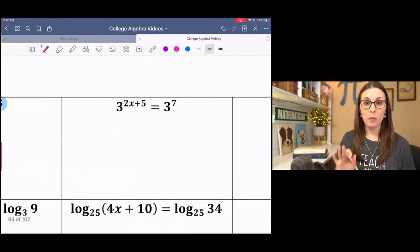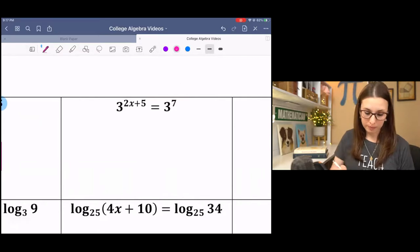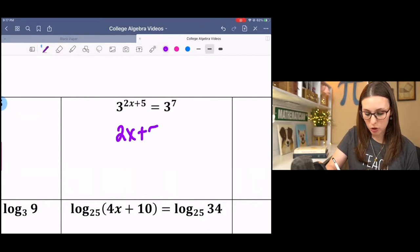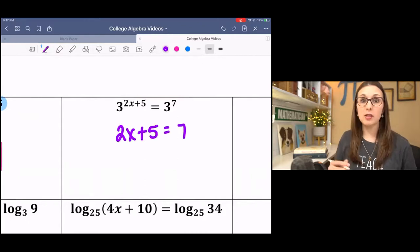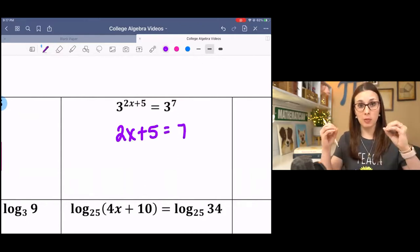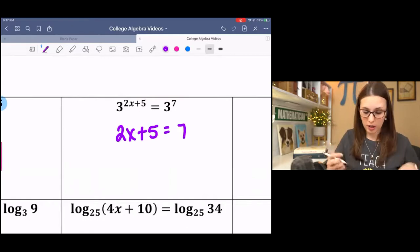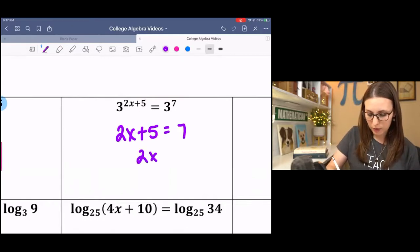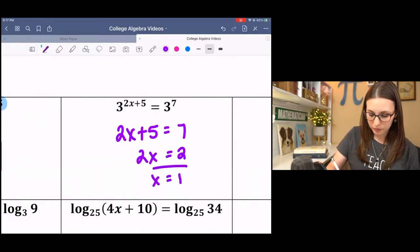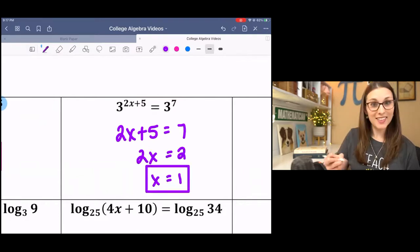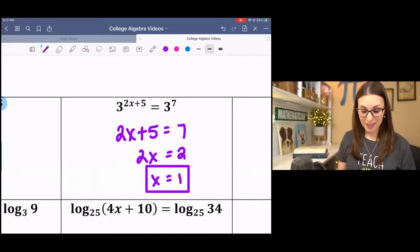Next example, pause it, try it, and come back. The bases are the same, so we can just pay attention to the exponent. Since the bases are equal, then the exponents must be also. We subtract 5 and divide by 2. And that's it. Pretty snazzy.